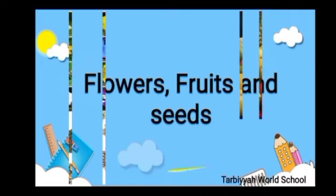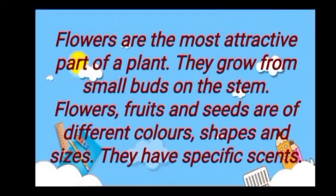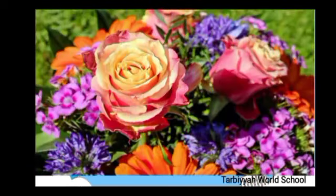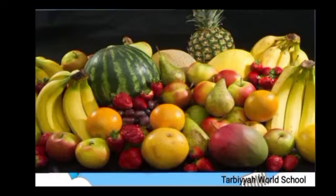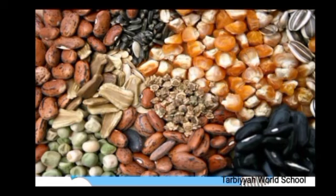You can see the picture of flowers, fruits and seeds. Flowers are the most attractive part of a plant. Flowers, fruits and seeds are of different colors, shapes and sizes. They have specific scents.